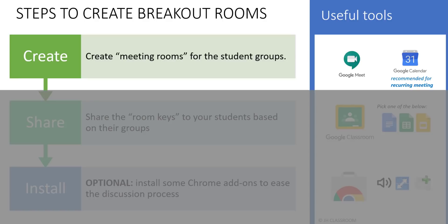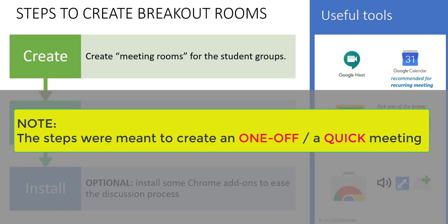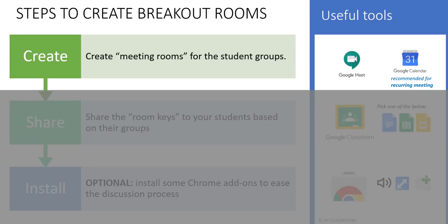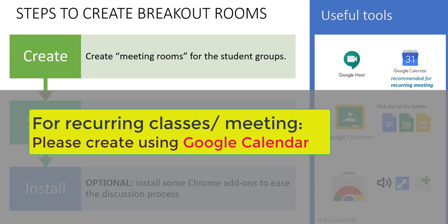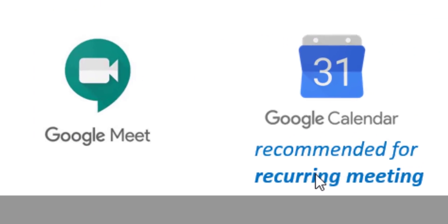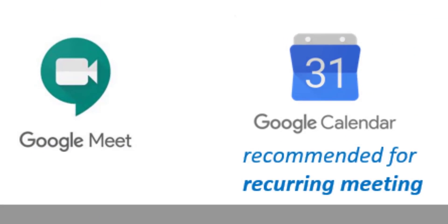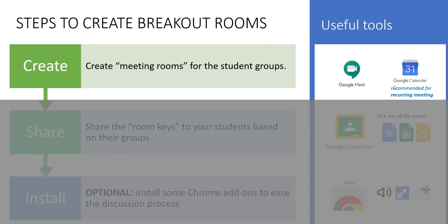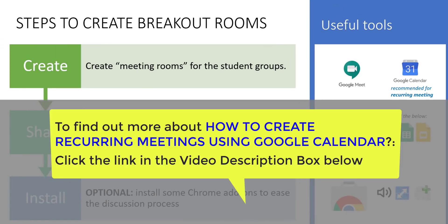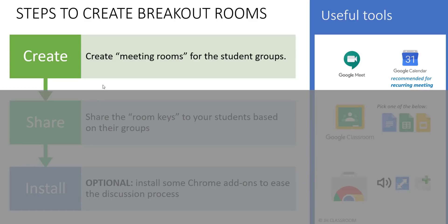Please take note that the steps for creating rooms just now were only meant for a one-off or quick discussion — in other words, you will not use the rooms again in the future. For recurring classes or meetings, such as every week or every day, that will not be advisable since the link may expire after some time. In that case, I strongly recommend you create the Google Meet link or rooms using Google Calendar instead. If you wish to find out more about how to create and schedule recurring meetings using Google Calendar, you may check out my video in the description box below.